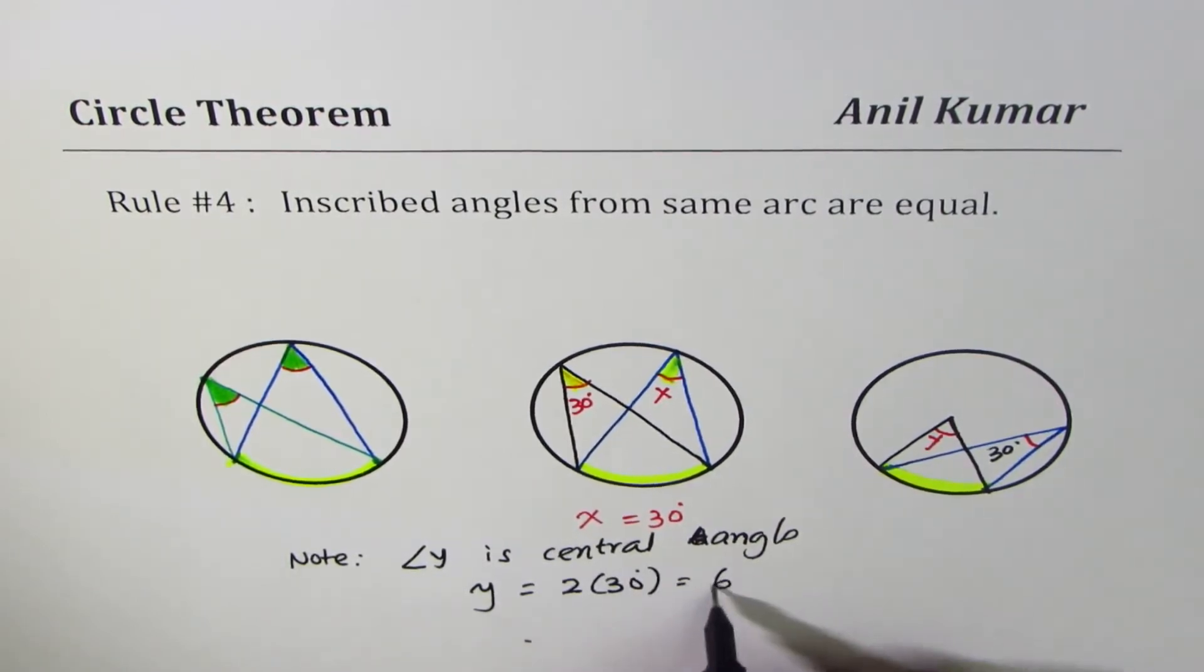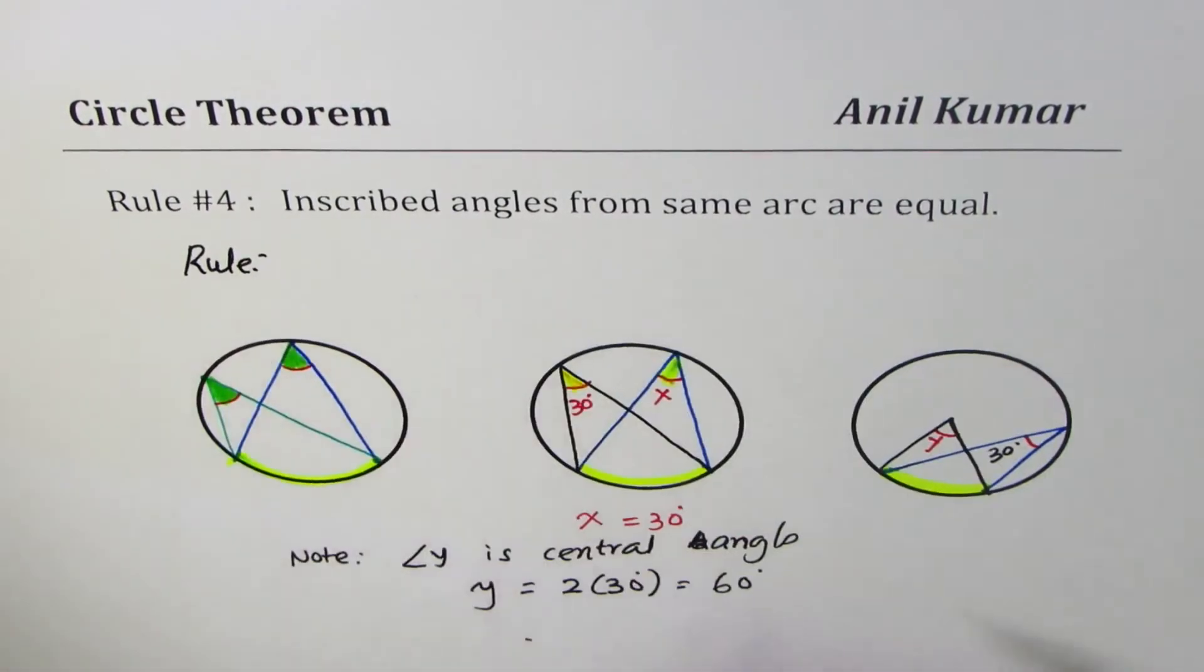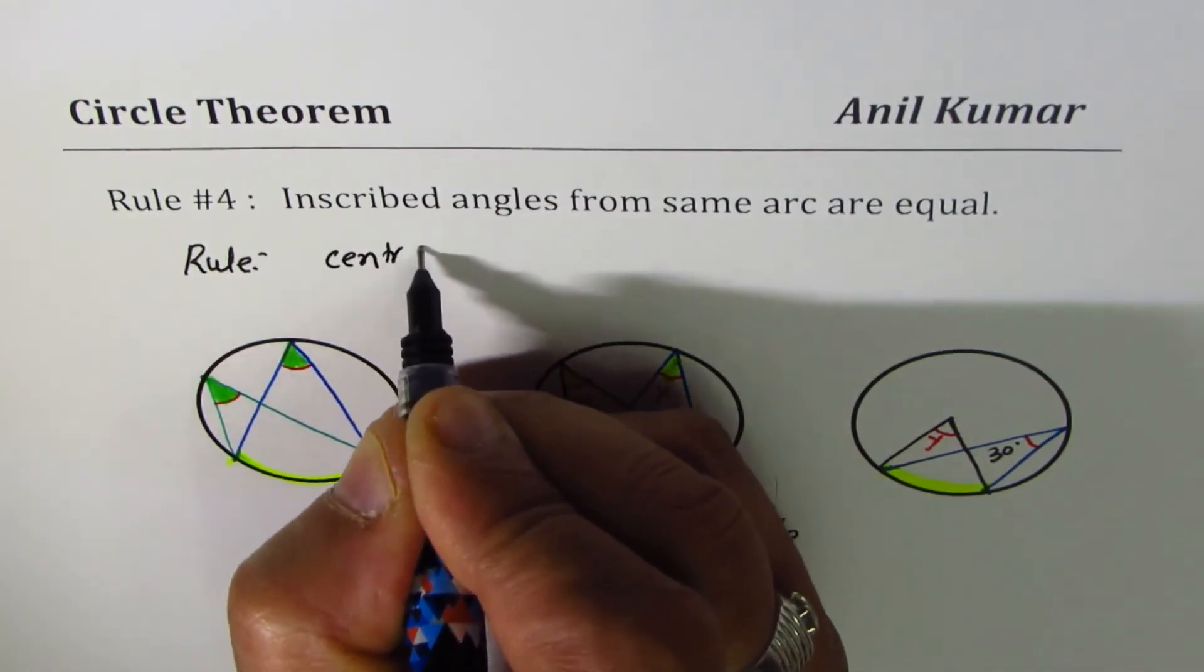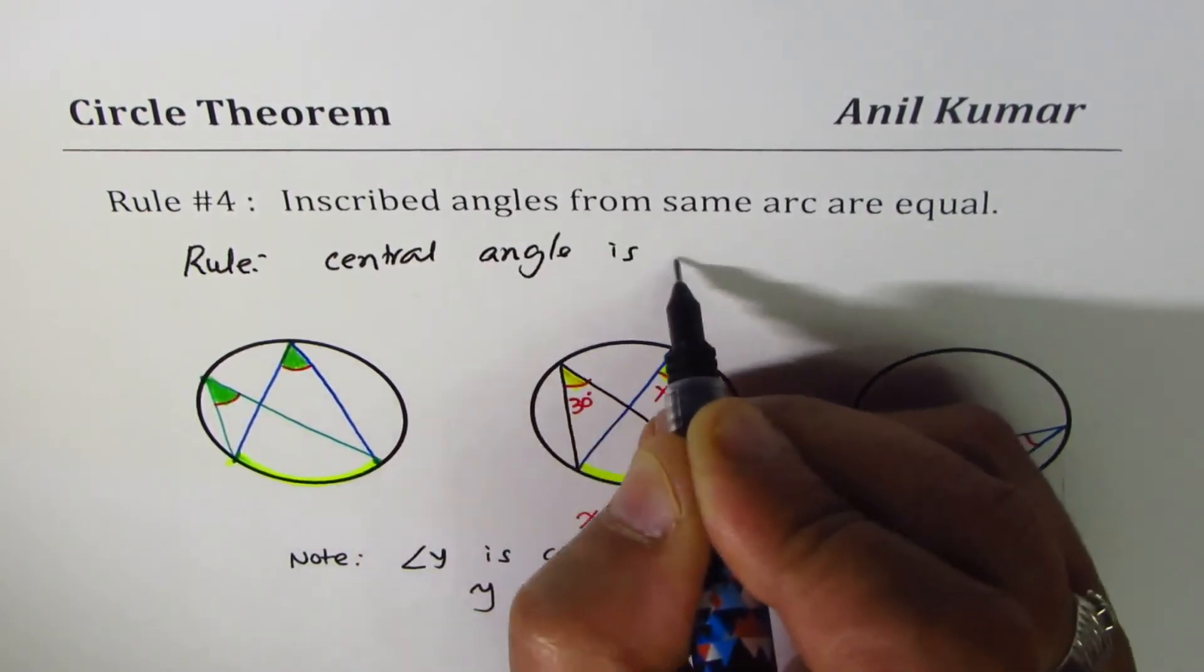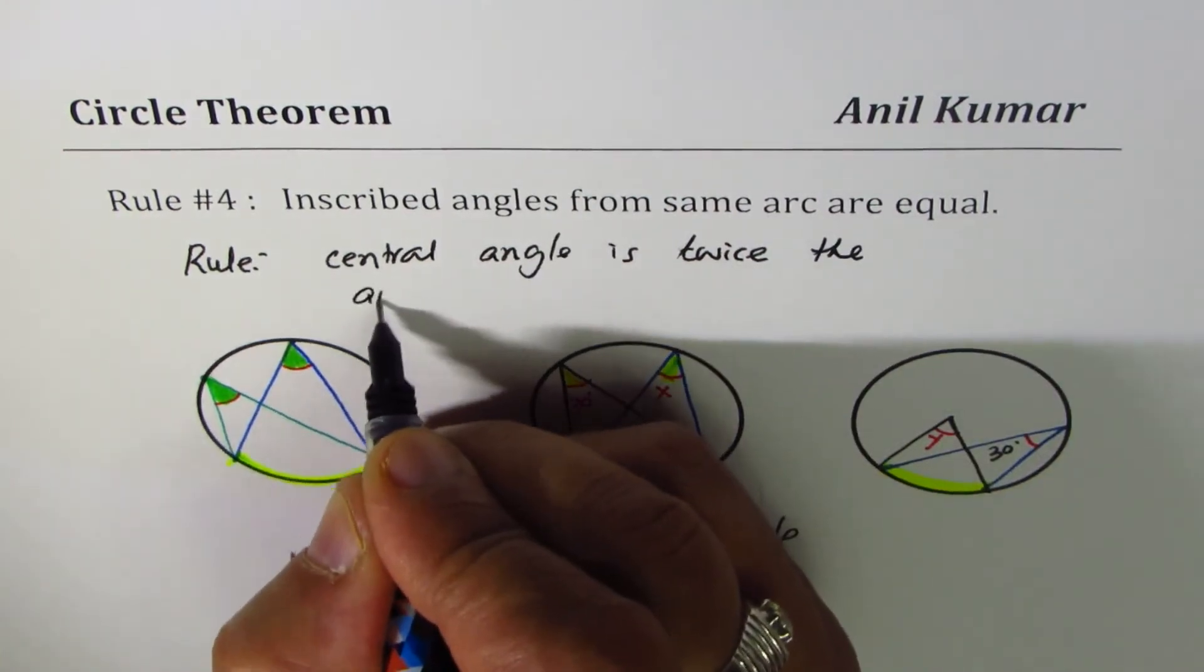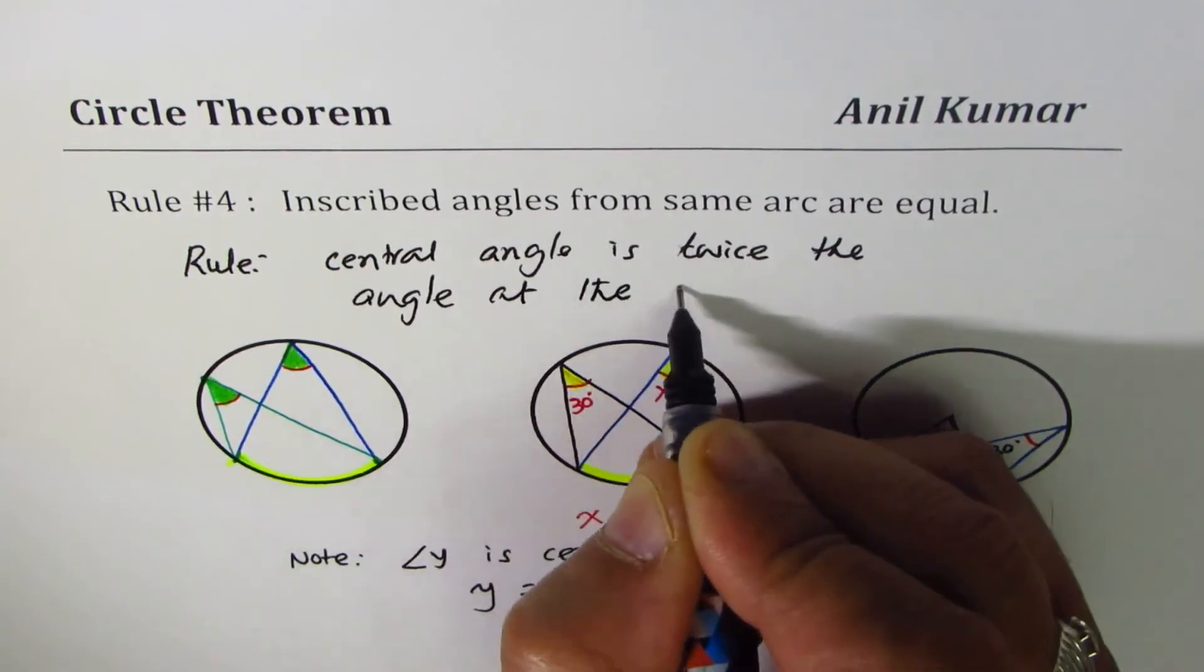So therefore y should be equal to two times 30 degrees, that is 60 degrees. That is from our rule. What is the rule? The central angle is twice the angle at the circumference.